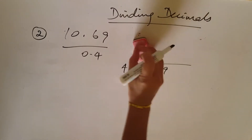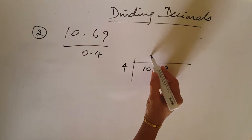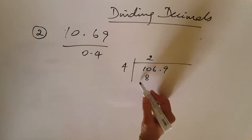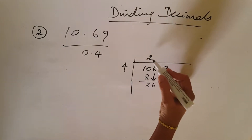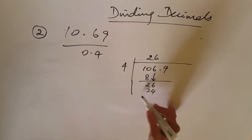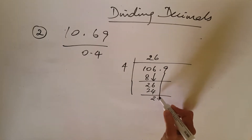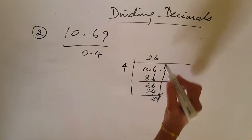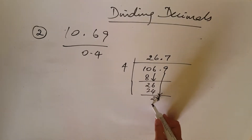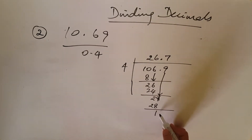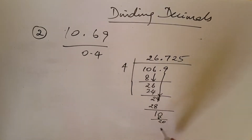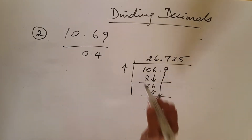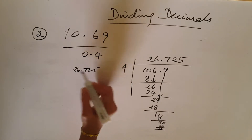Dividing 106.9 by 4: 2 fours are 8, bring down 6 — 6 fours are 24 with remainder 2, bring down 9 — decimal point comes here, 7 fours are 28 with remainder 1, put 0 — 2 fours are 8 with remainder 2, then 5 fours are 20. The answer is 26.725.